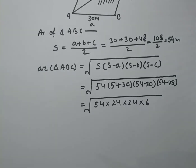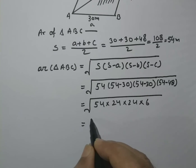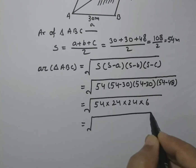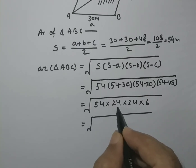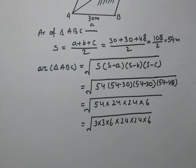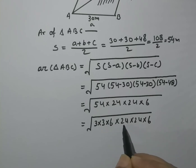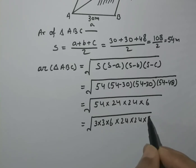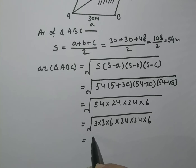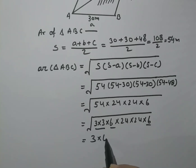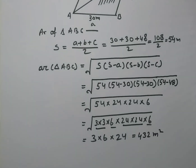Now children, let's find the prime factors. We write 54 as 3 × 3 × 6, and we have 24 × 24 and 6. Solving this, 3 comes out as a pair, another pair forms, into 6, and 24 forms a pair, into 24. After multiplying everything, we get 432 meter square.